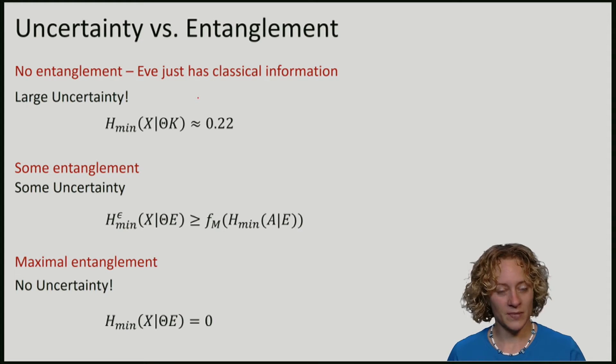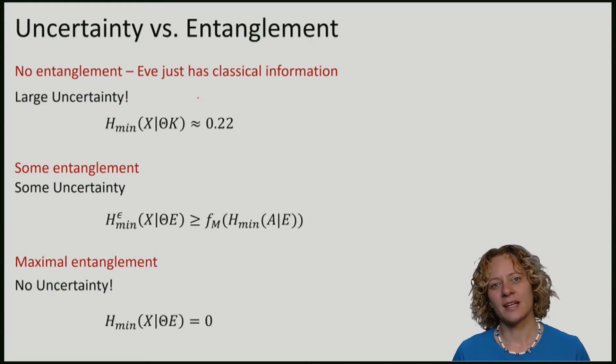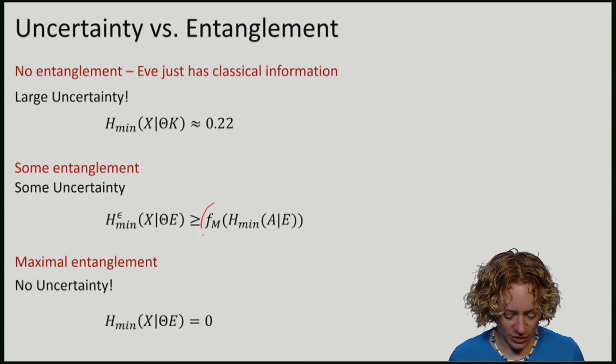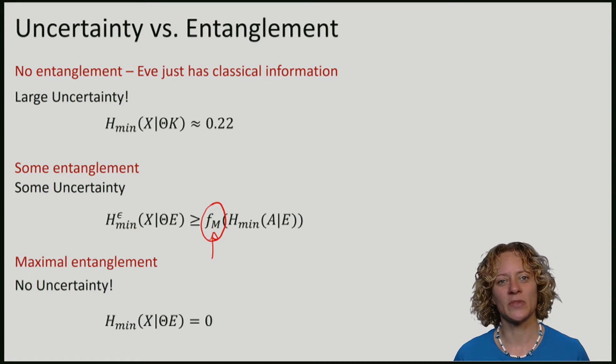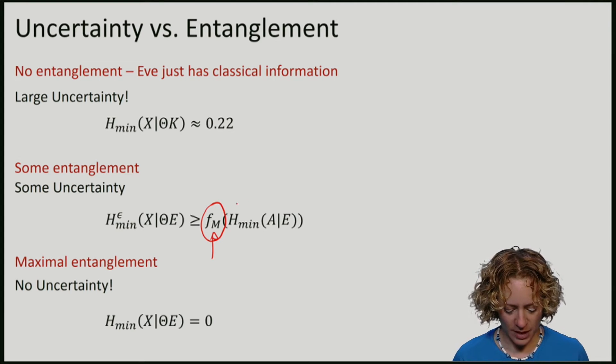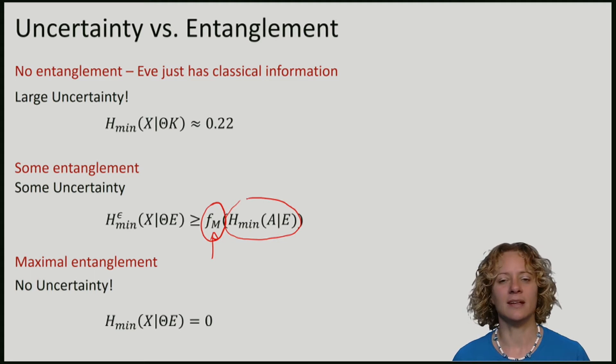In particular, this relation says that for any kind of measurement that Alice might perform, there exists some function f(m) indicating that this function will depend on the measurements that Alice does, and of course it depends on the a priori amount of entanglement between A and E.